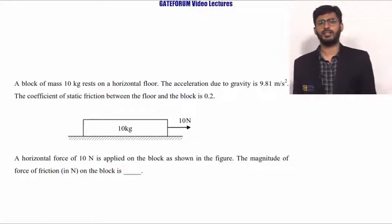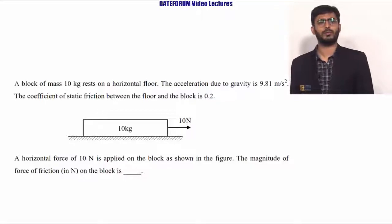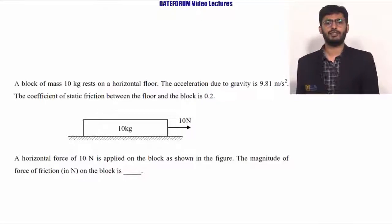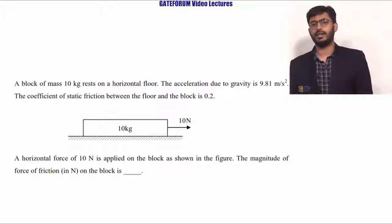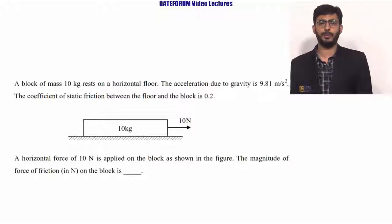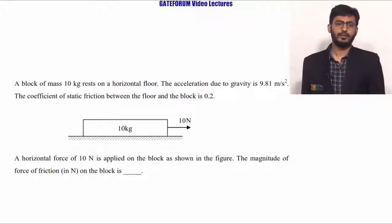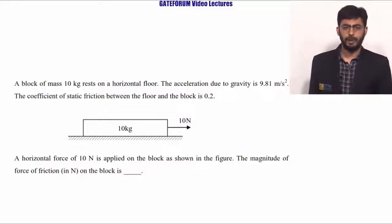This question belongs to engineering mechanics from the topic statics, and here a straightforward problem is given. A block of mass 10 kg rests on a horizontal floor. The acceleration due to gravity is 9.81 m/s². The coefficient of static friction between the floor and the block is 0.2. A horizontal force of 10 newton is applied on the block as shown in figure. The magnitude of friction force on the block will be?